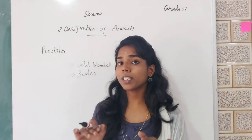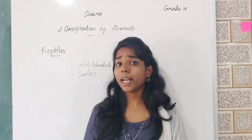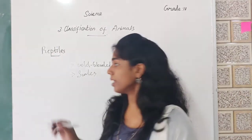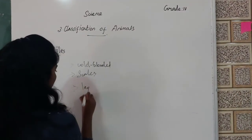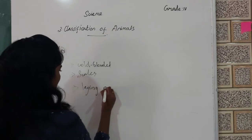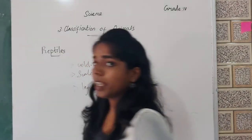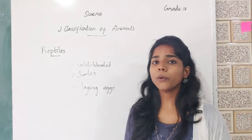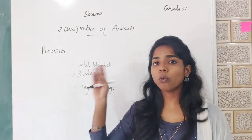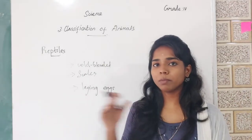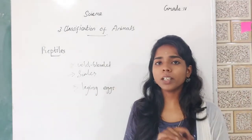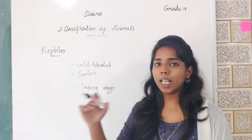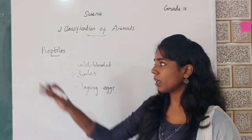The reptiles also reproduce by laying eggs. Reptiles reproduce by laying eggs. The final point is reptiles have four limbs to move. But reptiles like snakes do not have legs; they move with the help of scales. That's all about reptiles.